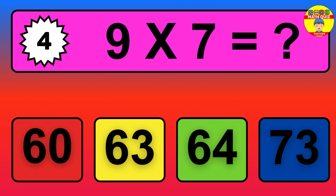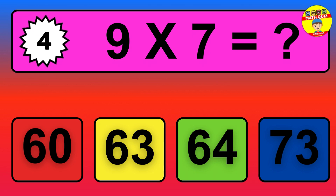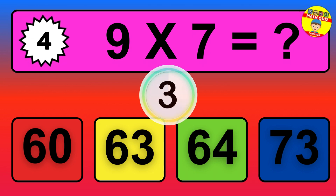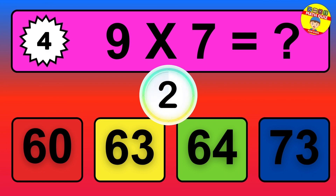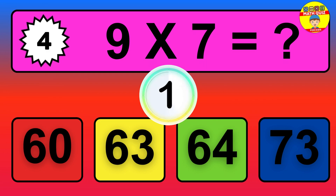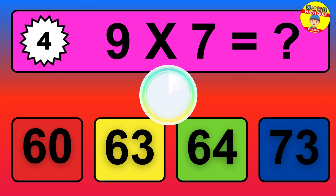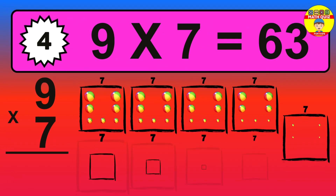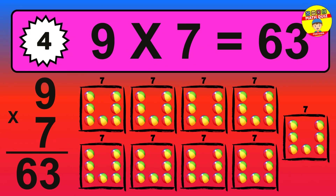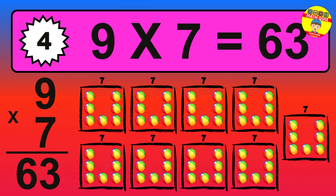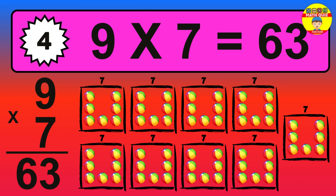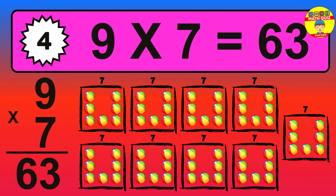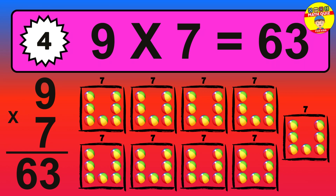Question four: nine times seven equals what? The answer is nine times seven is sixty-three. To calculate, we have nine groups with seven balls each one. So how many balls do we have? Sixty-three balls.